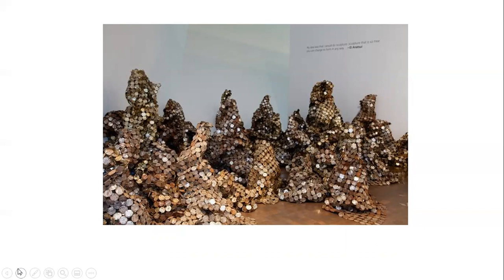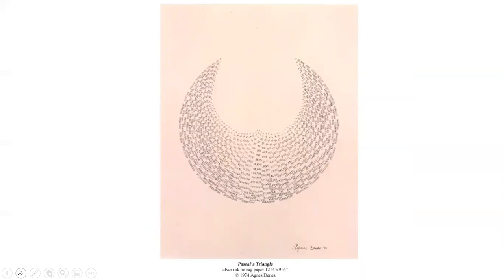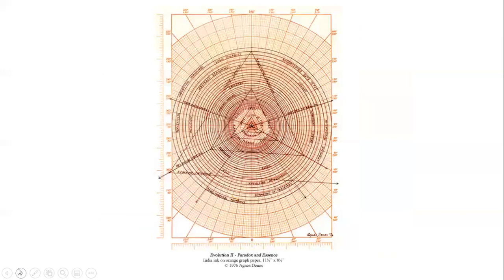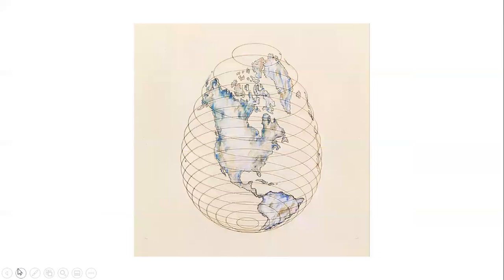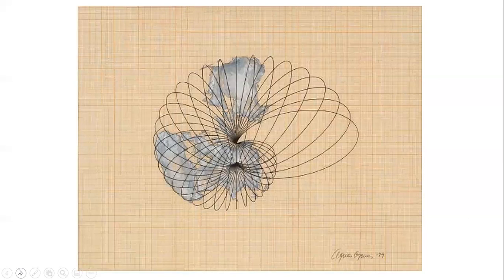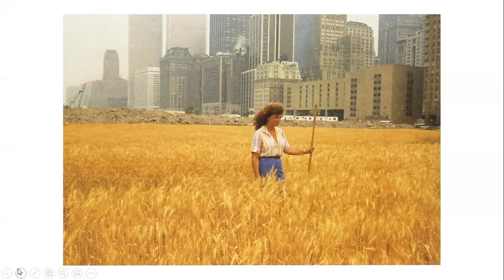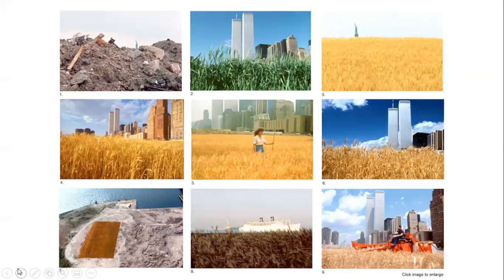This next artist is really fascinating. Her name is Agnes Denes. She uses these diagrams, and if you go on her website you'll see she works with the earth. Here she planted a wheat field in New York — they actually harvested it. You can see it happened; the Twin Towers are still there so it was a while ago. It's kind of like an earth work installation piece, but these are the ones I'm really fascinated by.